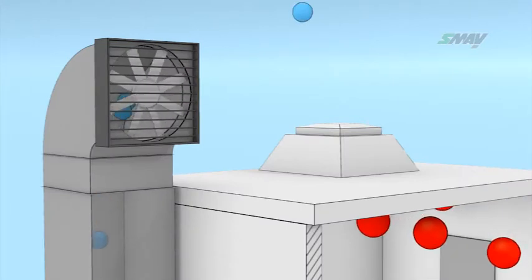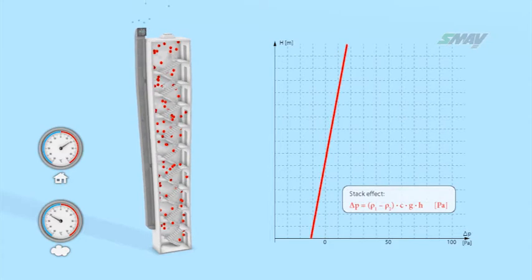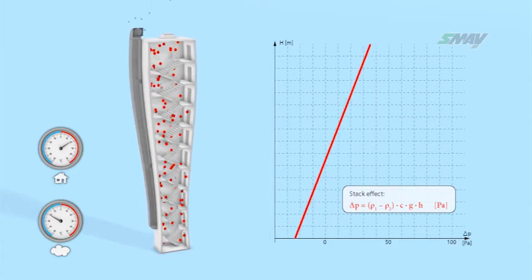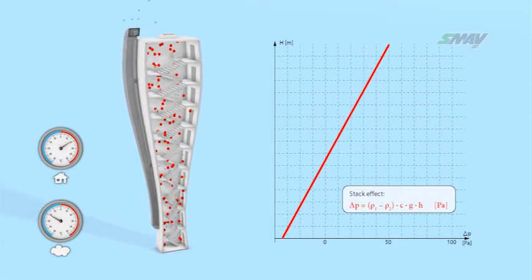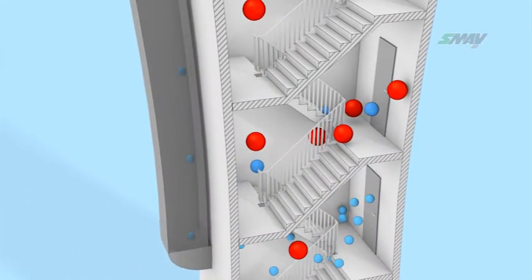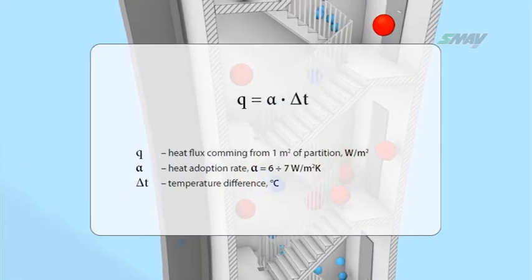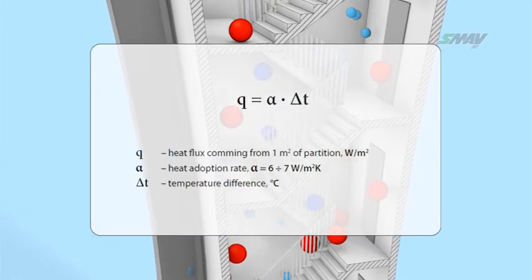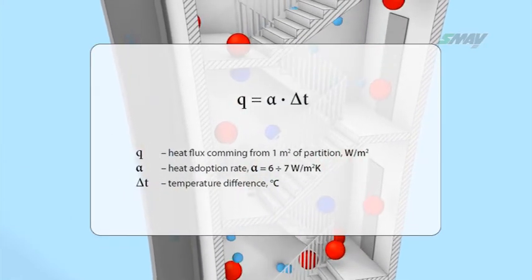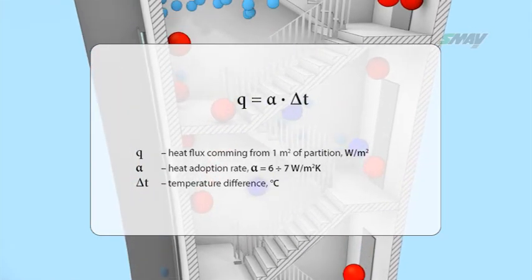However, if for that same system, air is supplied to the stairwell at a temperature significantly below that of the inside, then a pressure gradient will occur as a result of the stack effect. The stack effect occurs due to the heating up of air particles by walls and stairs, and the amount of heat dissipated by the walls is proportional to the difference in temperature between the air and the partitions.